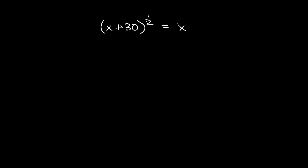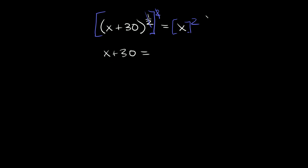Here's the next one. We have (x + 30) raised to the 1/2 is equal to x. To get rid of this fractional exponent, we raise the whole thing to the reciprocal — 2 over 1, which is just 2. What we do to one side we do to the other, so the 1/2 and the 2 cancel out, leaving us with x plus 30 is equal to x squared.